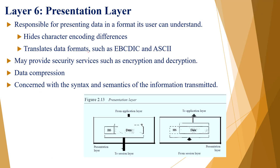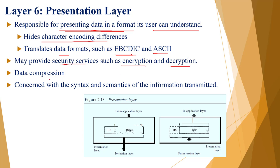Layer 6 is the presentation layer, responsible for presenting data in a particular format. It hides character encoding differences and translates data formats such as EBCDIC and ASCII. It also provides security services including data encryption, decryption, and compression. Both sender and receiver machines follow the same syntax and semantics — the same format — for presenting data.